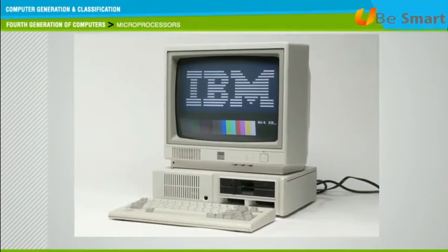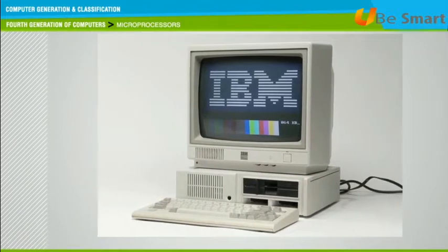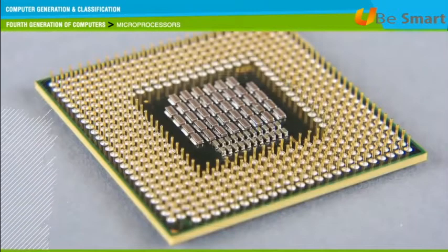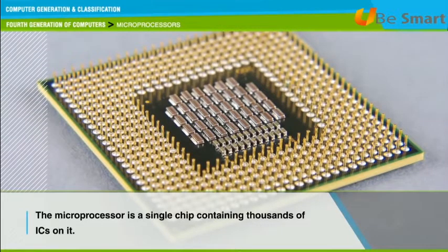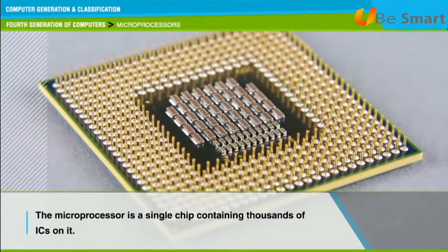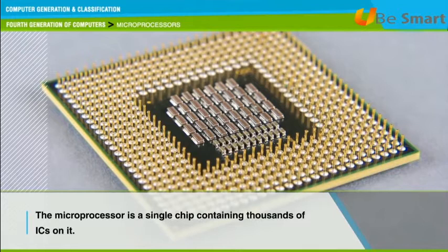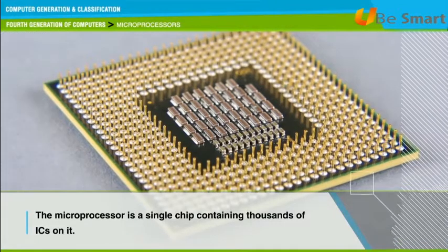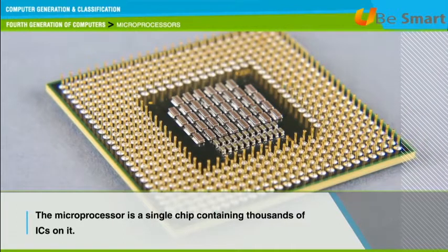The fourth generation of computers were characterized by the use of the microprocessor in the CPU. The microprocessor is a single chip containing thousands of ICs on it. It is considered as the heart of all workstations and personal computers, and the central processing unit is built using these microprocessors.